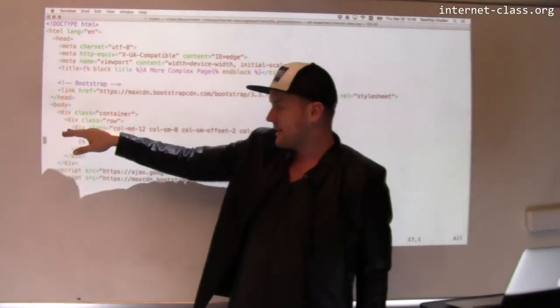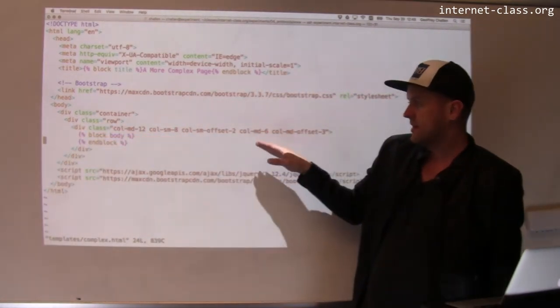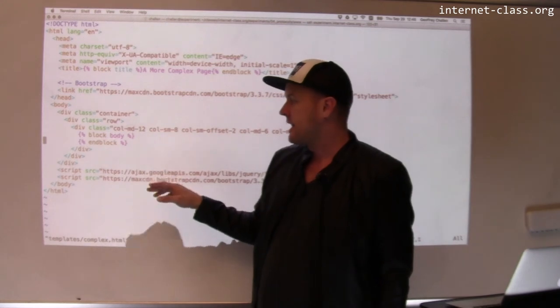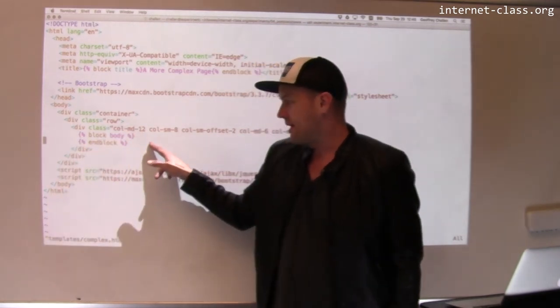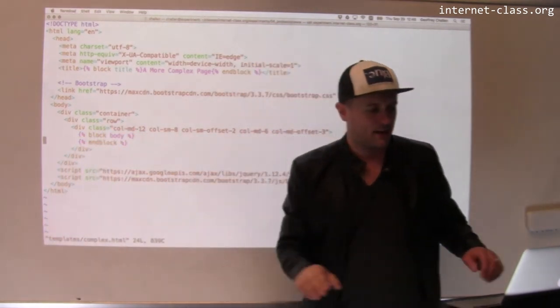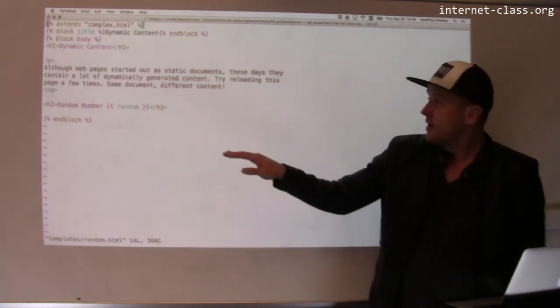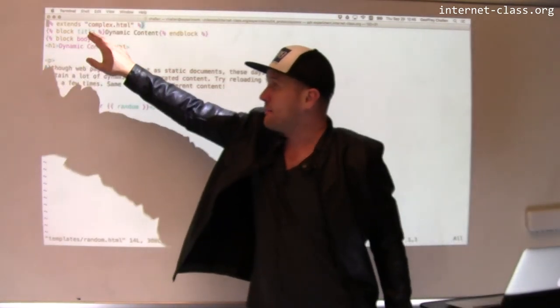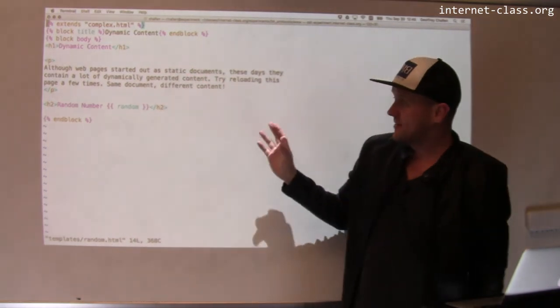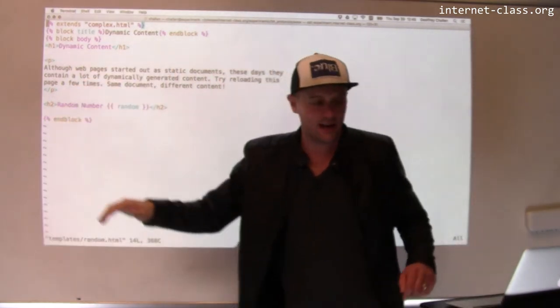And then what this does is it sets up a container row. This is Bootstrap stuff to figure out how wide things should be. And then there's this part right here: block body, end block. If I go back to my first template, you can see that it says block body.